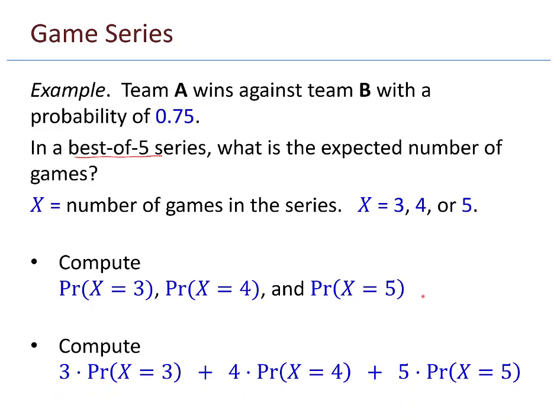Let me ask you to pause the video, but let's talk about these probabilities first. The probability X equals 3—the series can only go two ways: either A wins all three in a row or B wins all three in a row. To compute this, you'd just compute 0.75³ plus 0.25³, and that gives you Pr(X=3).